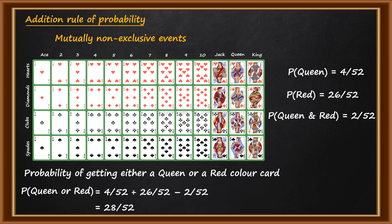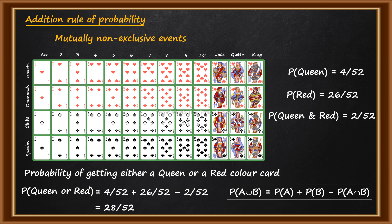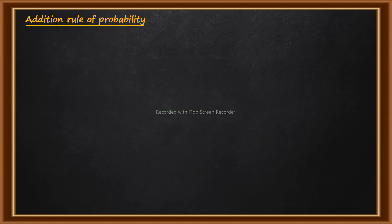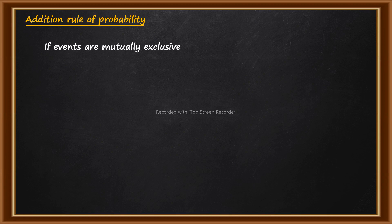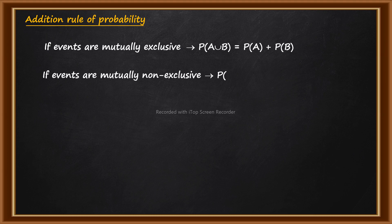When events are mutually non-exclusive, the formula is: probability of A union B is equal to probability of A plus probability of B minus probability of A intersection B. We have to subtract the common probability — the probability of the common events when both events are occurring at the same time.